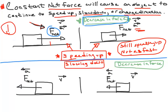When we say the net force decreases, that means the magnitude went down but the direction didn't change. We're still saying there's a net force — it just went down a little, not to zero. So the object still speeds up.